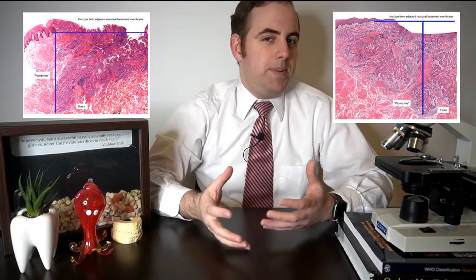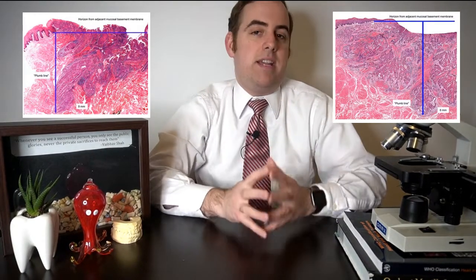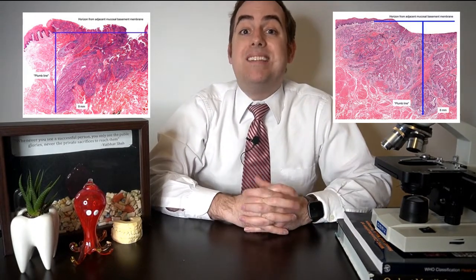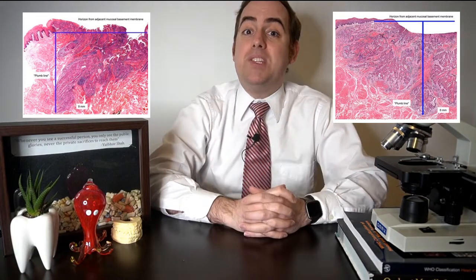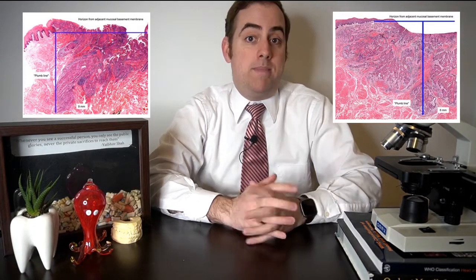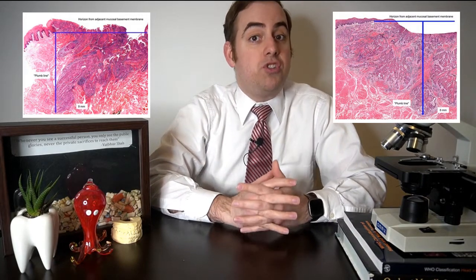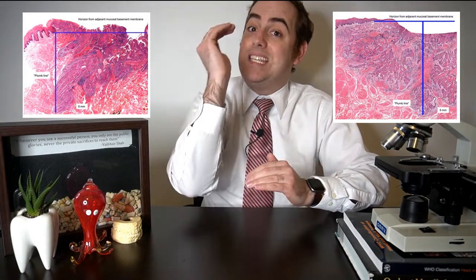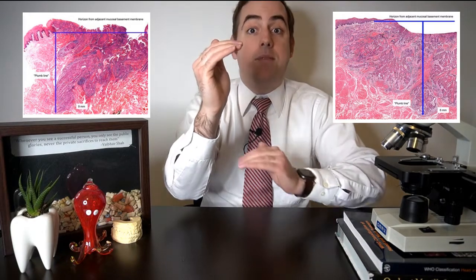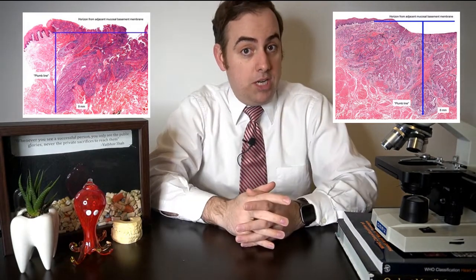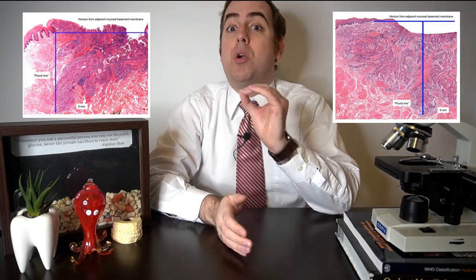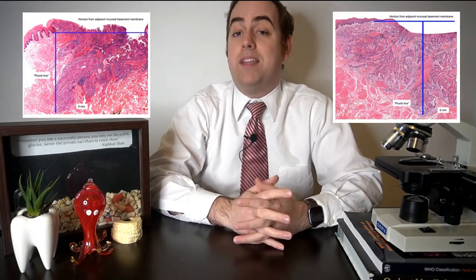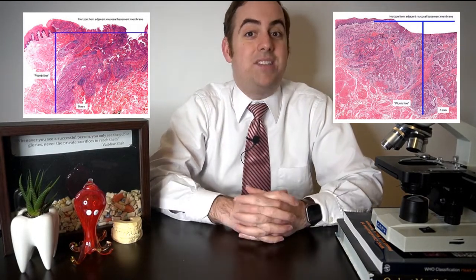I need to spend some time discussing depth of invasion, as it's very important in reporting these cancers as it helps determine the staging. Depth of invasion is a measurement perpendicular from the basement membrane of the nearby normal epithelium down to the deepest portion of the carcinoma. This is in contrast to tumor thickness, which is the measurement from the top of the epithelium down to the bottom of the tumor. This is an important distinction — when reporting depth of invasion, make sure you are not confusing it for tumor thickness. These images are taken directly from the current version of the CAP synoptic summary as of April 2022.